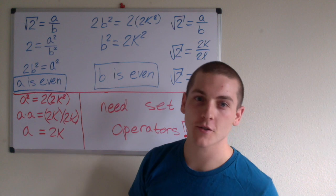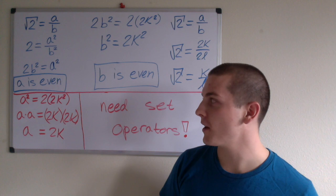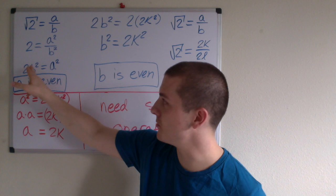If we then square both sides, we have 2 equals a squared divided by b squared. If we multiply both sides by b squared, we have 2b squared equals a squared, and from this we know that a squared is even. a squared is even because we have 2 times some integer, which is b squared.